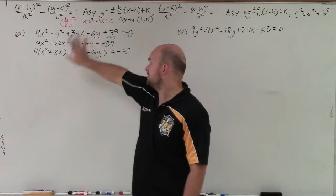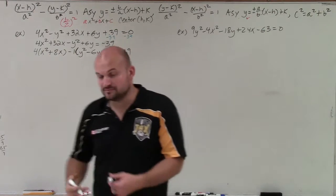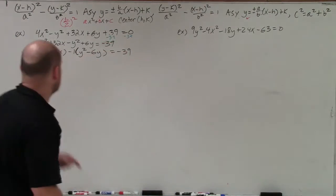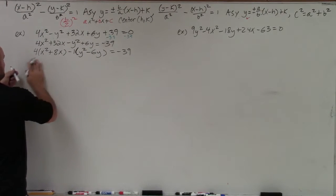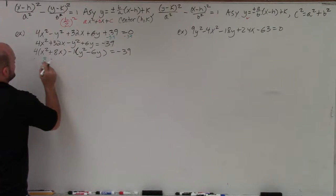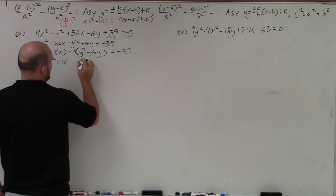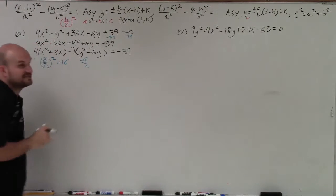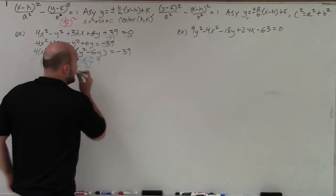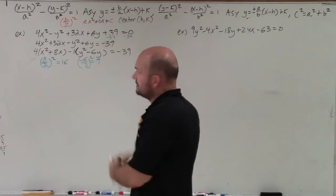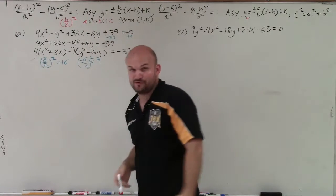Now that a is equal to 1, I can take b divided by 2 and square it. For the x terms: 8 divided by 2 is 4, and 4 squared is 16. For the y terms: negative 6 divided by 2 is negative 3, and negative 3 squared is 9. Now I'll plug those values back into the parentheses to create our perfect square trinomials.